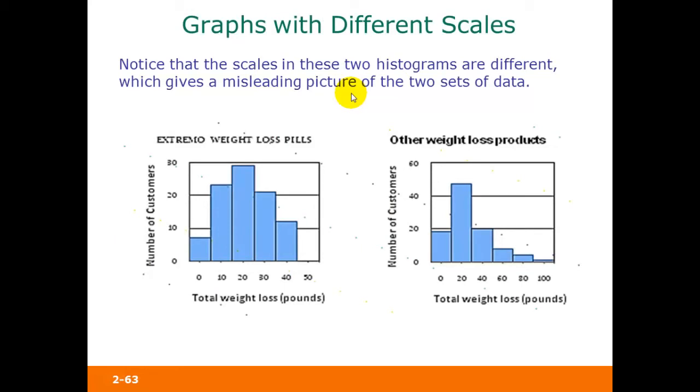Using graphs with different scales is another way to give a misleading picture of two sets of data. Here we have two graphs: one for extremo weight loss pills that shows the total weight loss in pounds of their customers, and the other for other weight loss products.